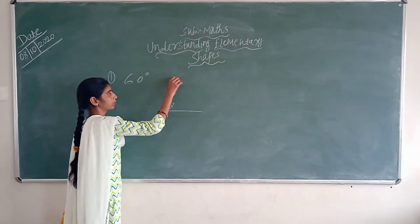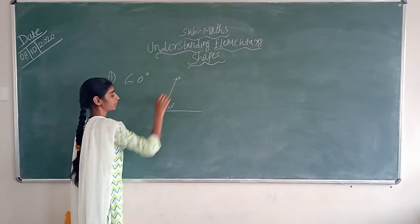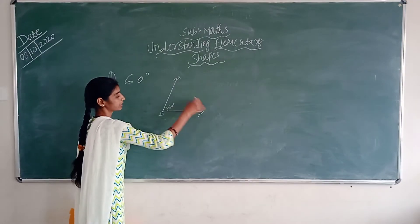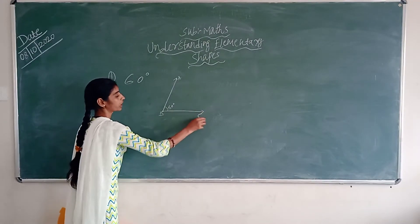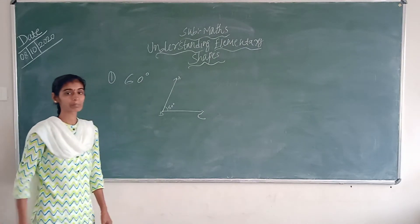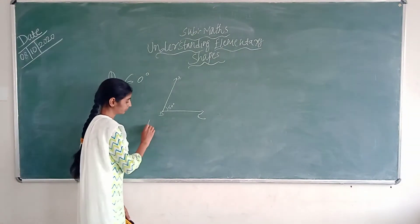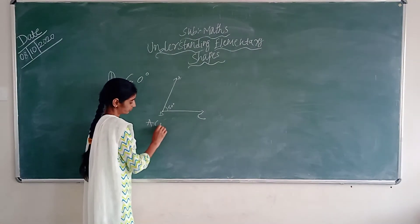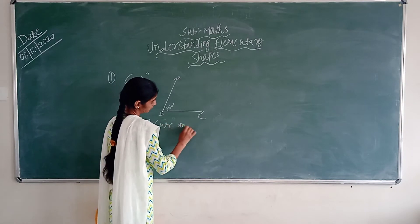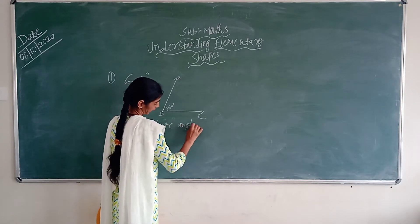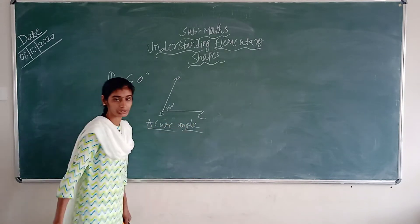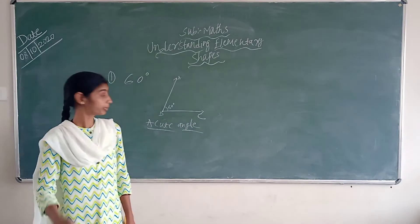So you can make the points as A, B and C. So which angle is this? 60 degrees is an acute angle. In this way, you need to measure.